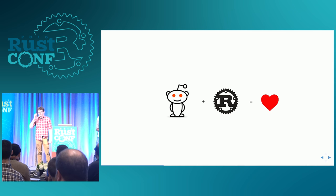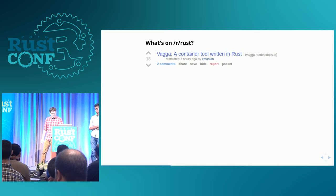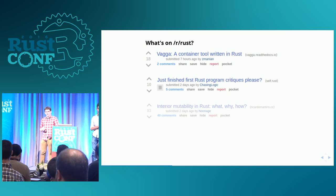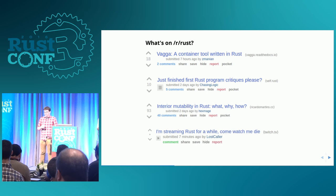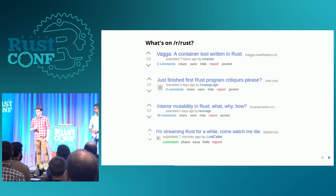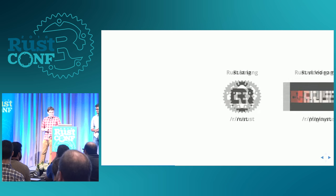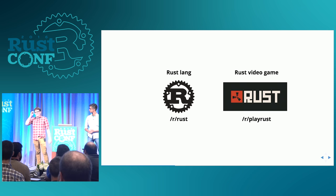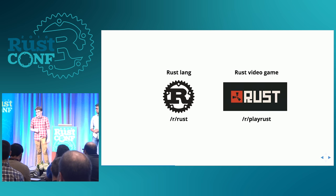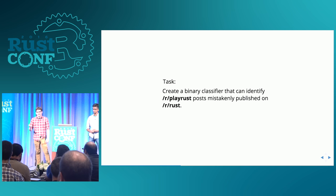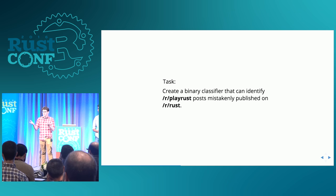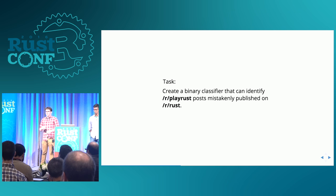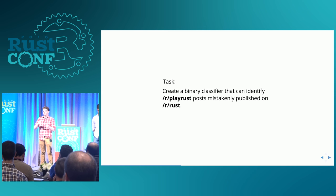We spend a lot of time on the Rust subreddit — there are a lot of good conversations there, it's where we get the majority of our Rust news. Looking at some posts: VAGA container tool, someone seeking feedback on their Rust program, a blog post on interior mutability, and then 'I'm streaming Rust for a while, come watch me die.' The reason for that confusing post is that there is a video game called Rust with its own subreddit. Once in a while someone posts about the video game and ends up on the Rust language subreddit. We think this is a great candidate for machine learning — we'll build a Rust classifier for the Rust subreddit entirely in Rust.